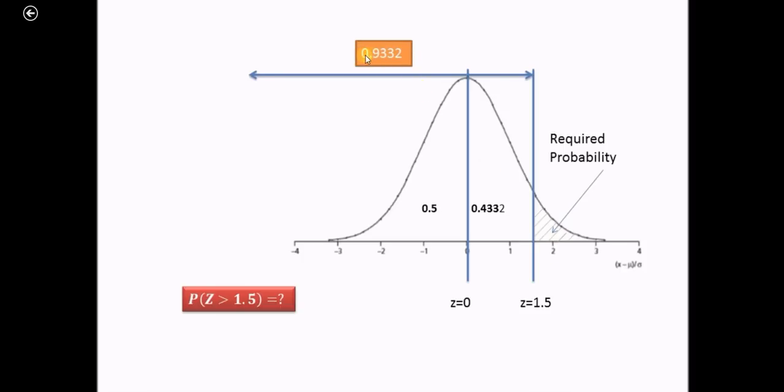From the table, we have obtained 0.9332 as the cumulative normal probability, which can be split up into two forms: 0.5 plus 0.4332. So if we subtract from 1 this 0.9332 value, then we will get the required probability.